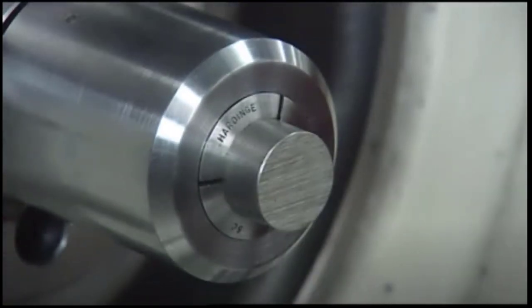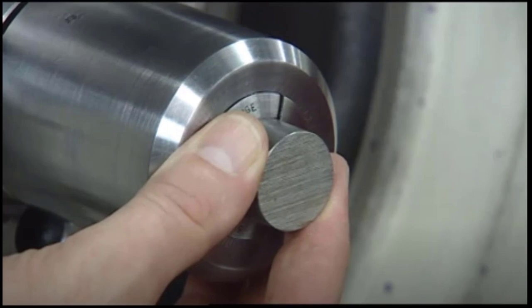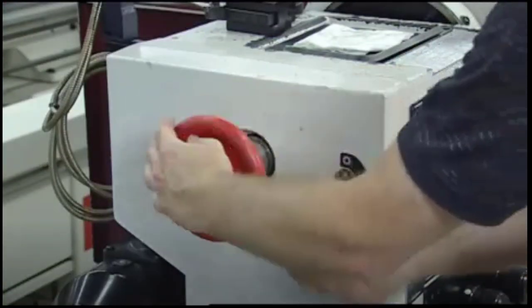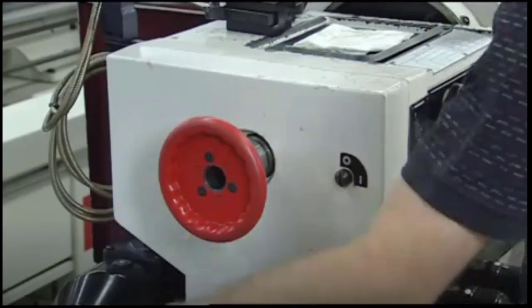To remove the work, loosen the draw tube about one to two turns. If the work doesn't release, tap the end of the draw tube and release the tapers on the collet and the adapter.